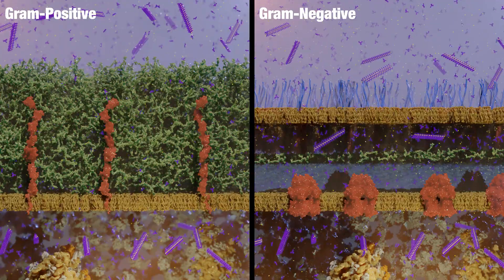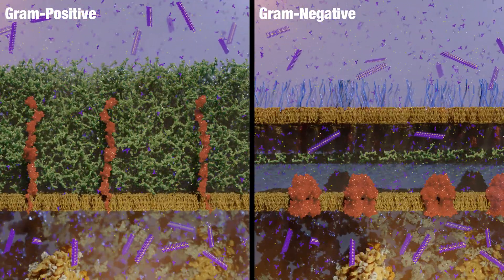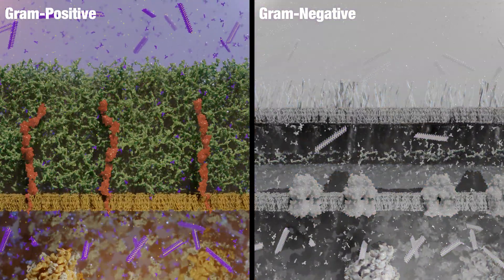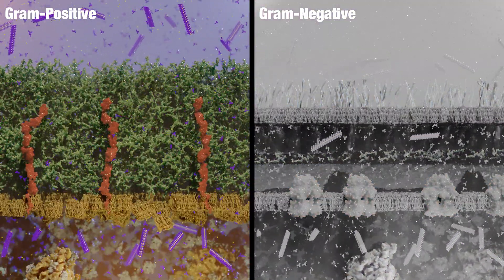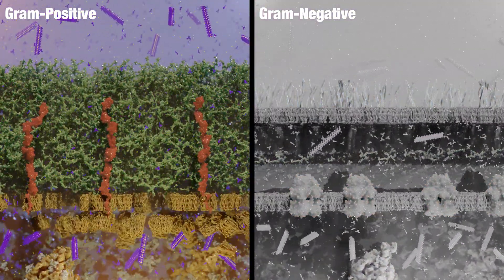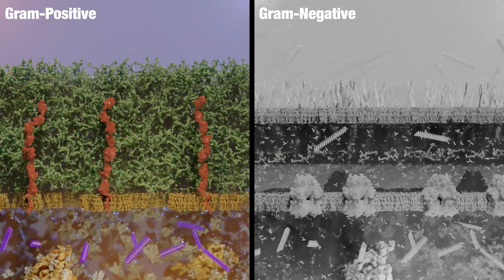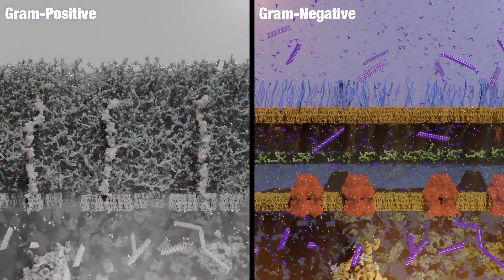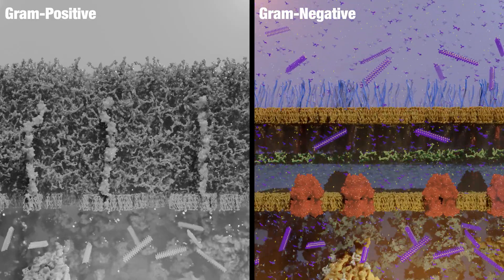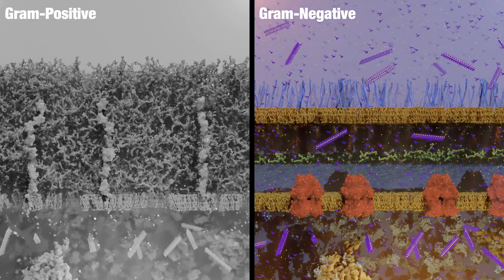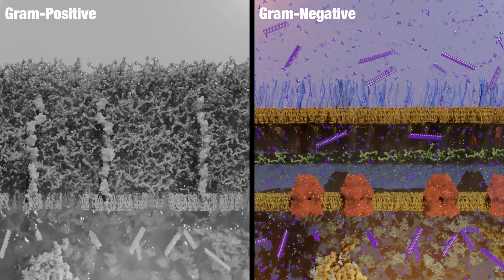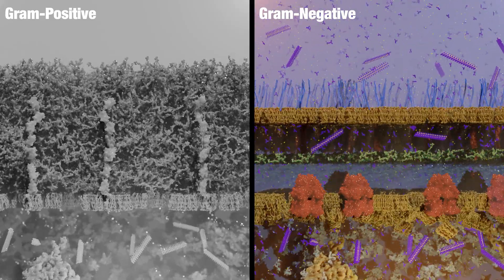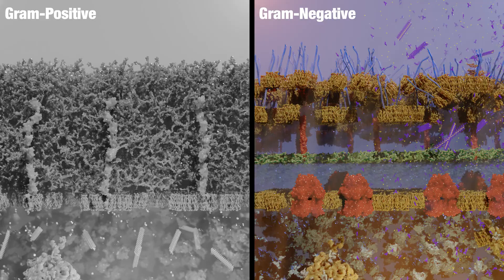The key step is the ethanol wash. The alcohol damages the phospholipid bilayers. For gram-positive bacteria, the thick peptidoglycan wall traps the dye complexes. For gram-negative bacteria, the outer membrane is stripped away and the inner membrane is damaged. The thin peptidoglycan layer cannot hold the large dye complexes — they escape, thereby decolorizing the cell.